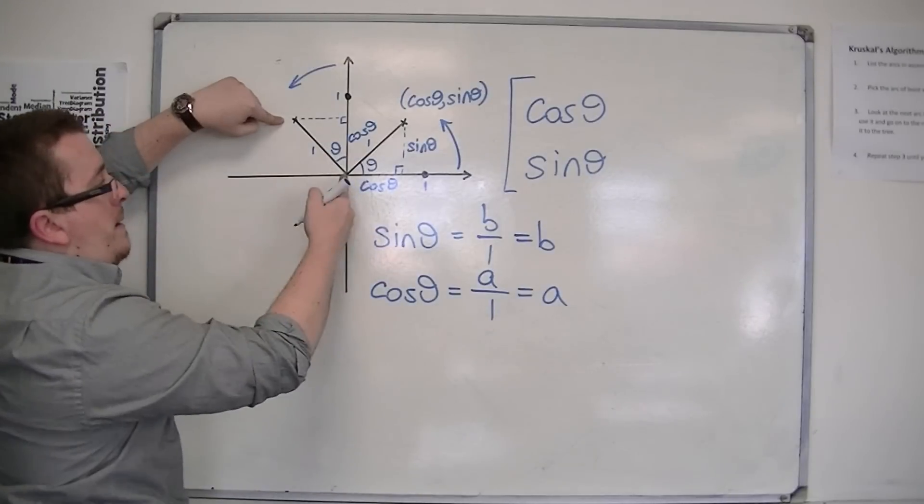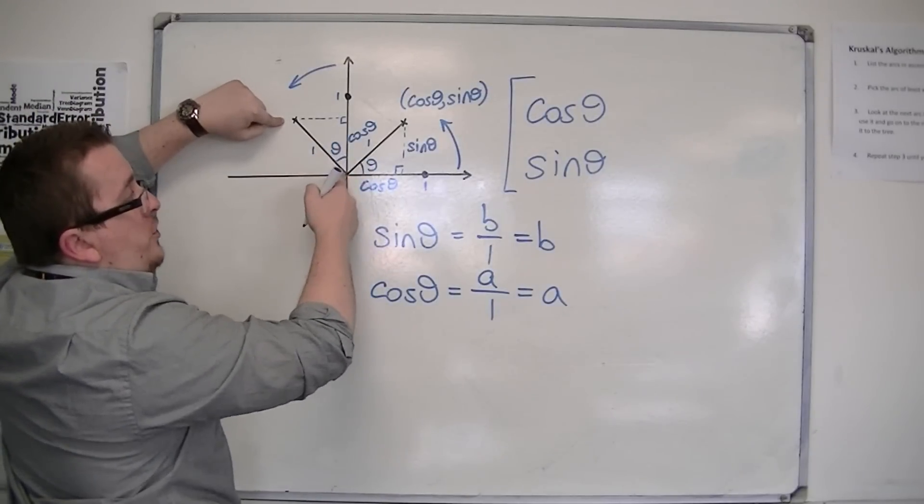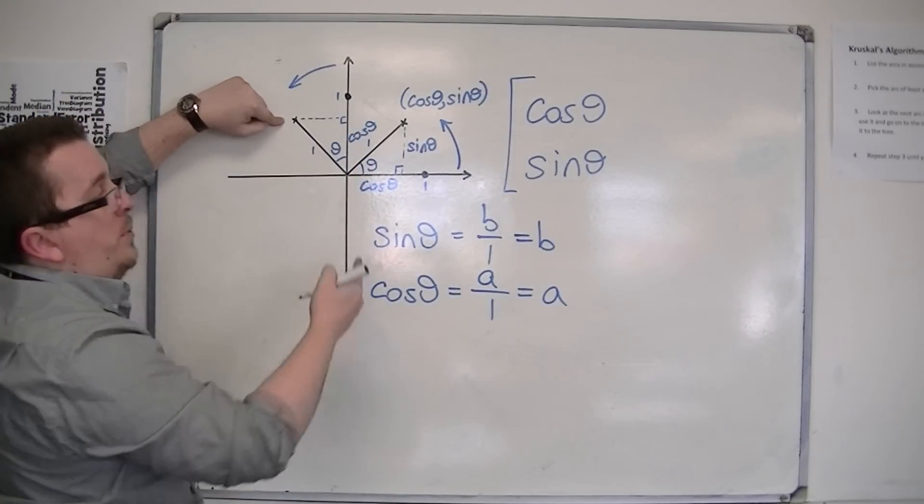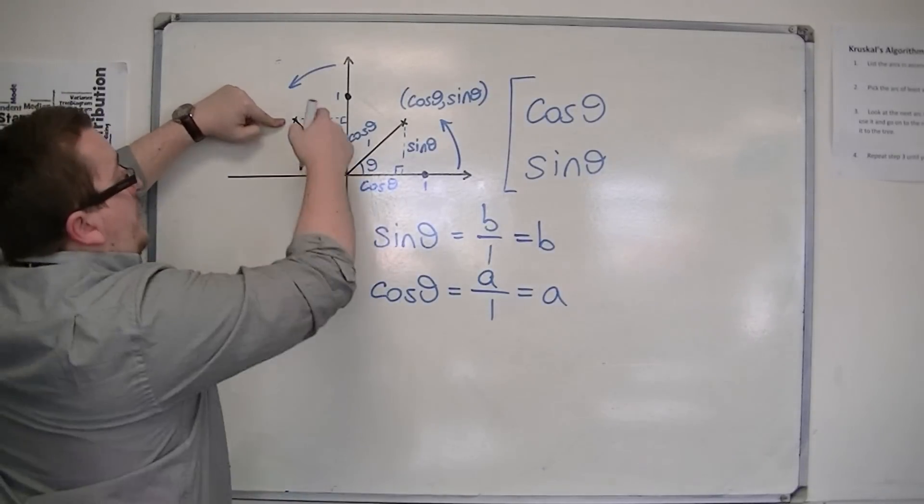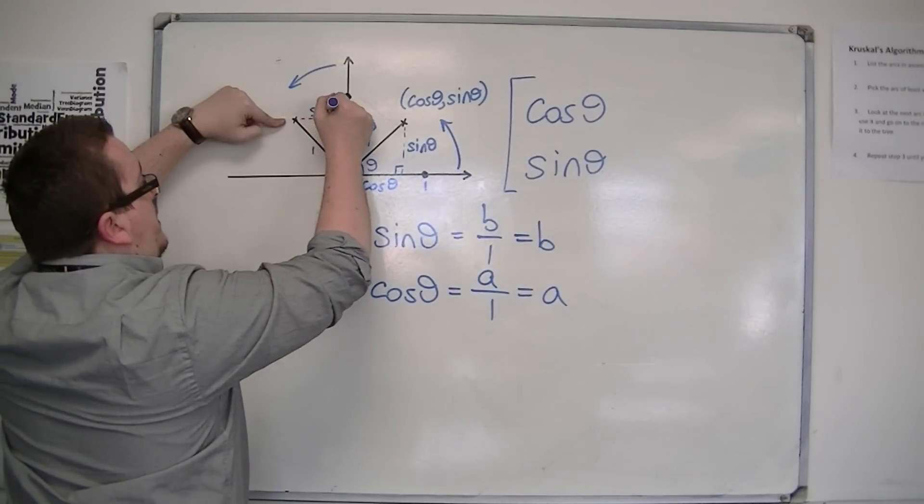cos theta, because that's 1, remember, so cos is adjacent over hypotenuse, and the hypotenuse is just 1, and this is the opposite, so this must be sine theta.